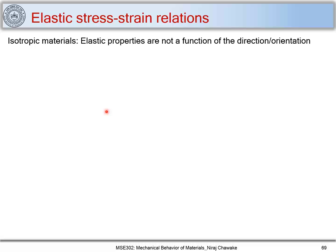Till now we have seen how to define a stress state at a given point, and also how to find a state of strain at a given point. Now let's look at what are the relations between stress and strain for isotropic materials. Isotropic materials are those materials whose elastic properties are not a function of direction or orientation — meaning that even if I change the direction, the elastic properties remain the same.